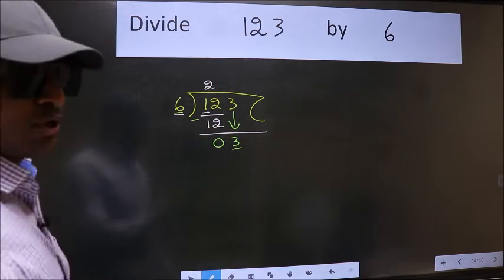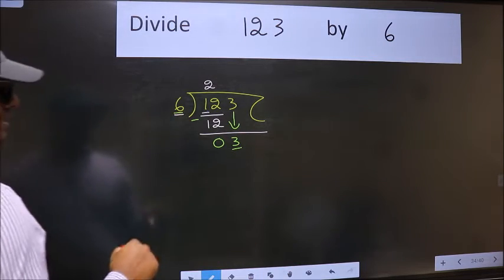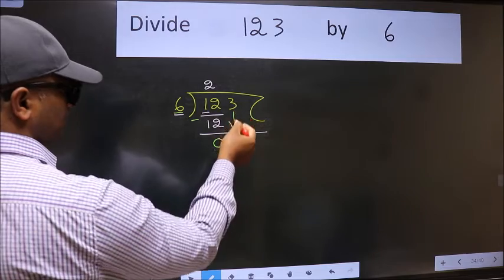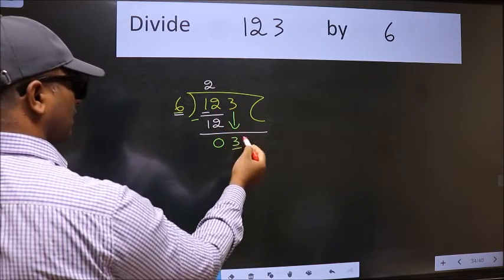Which is wrong. Why is it wrong? Because you just brought this number down, and in the same step, you want to put the decimal point and take 0.